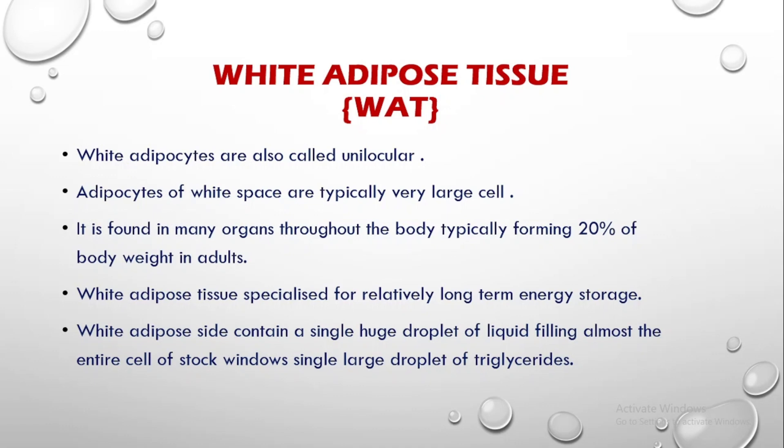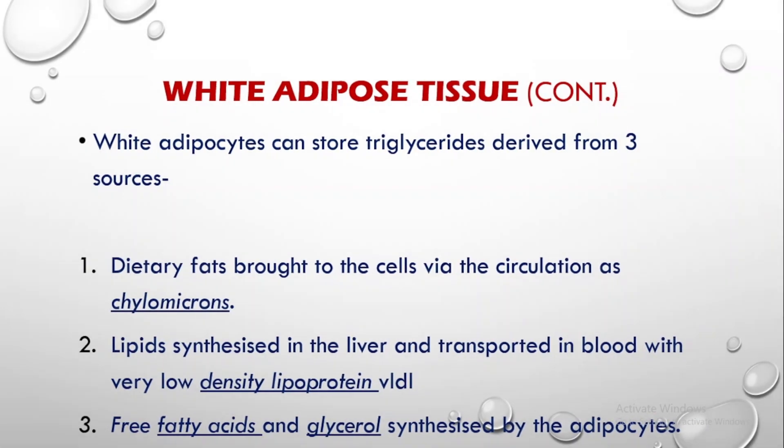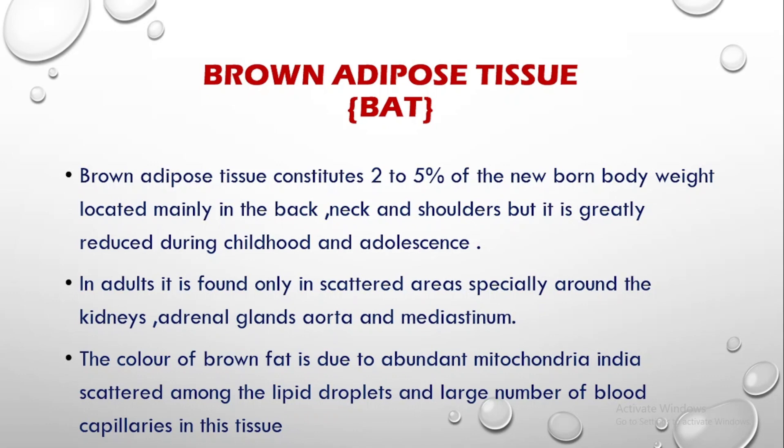White adipose tissue: white adipocytes are unilocular, having large white spaces, and are found in many organs throughout the body, typically forming 20% of body weight in an adult. White adipose tissue is specialized for relatively long-term energy storage and contains a single huge droplet of liquid triglycerides filling almost the entire cell. White adipocytes can store triglycerides derived from three sources: dietary fats brought via circulation as chylomicrons, lipids synthesized in the liver and transported in blood as VLDL, and free fatty acids and glycerol synthesized by the adipocytes themselves.